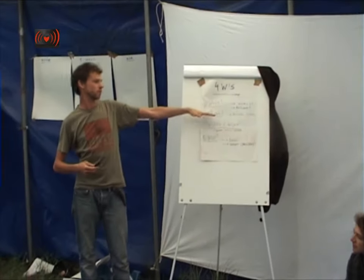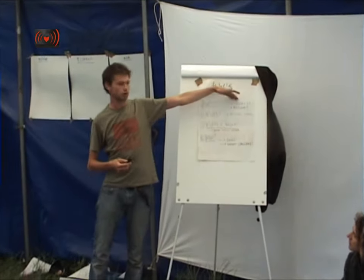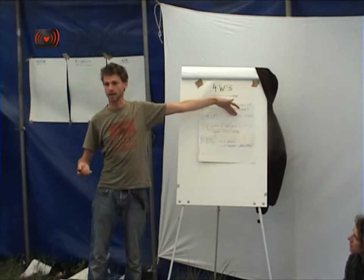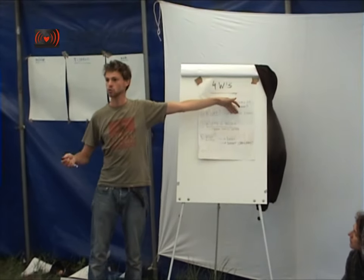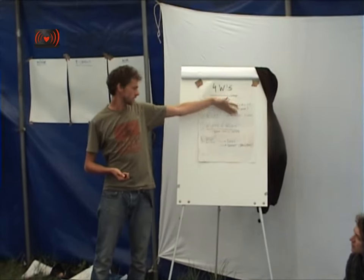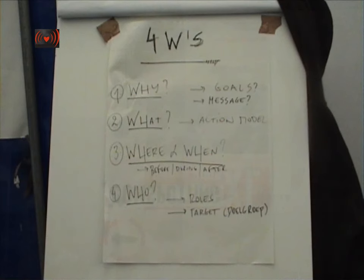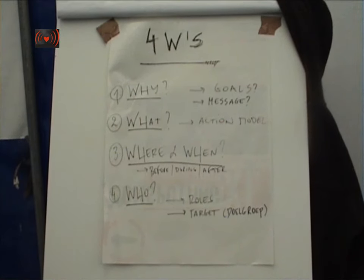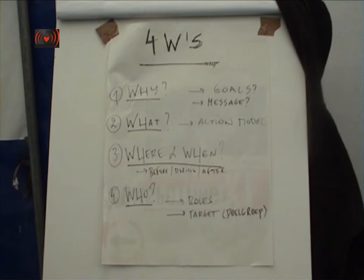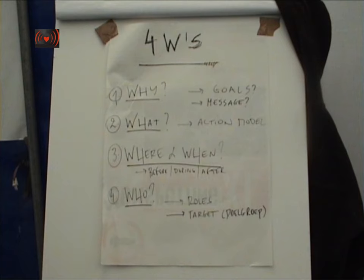Once you've decided within your group that this is the goal and this is the action model that suits the goal best, you can get into more detail discussing the where and when of your action. The where refers to the place of your action — like a specific supermarket, the nuclear power plant, or the Electrabel office.